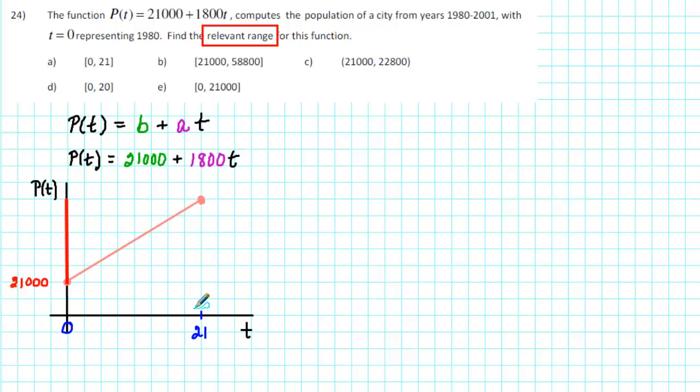The ending population occurs when t = 21, so what we'll need to do is to calculate P(21). To evaluate P(21), substitute 21 for each t in the function formula. We get 21,000 + 1,800 times 21. Using a calculator that gives us a value of 58,800.